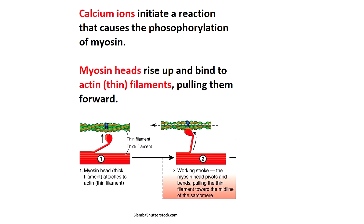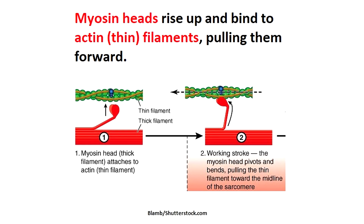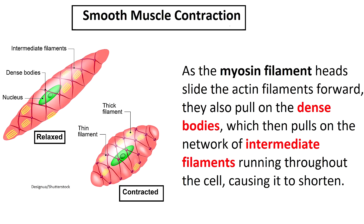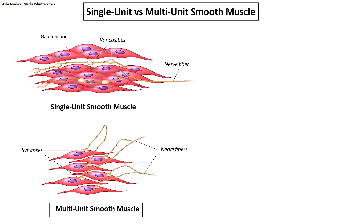Here is a quick overview of how smooth muscle contracts using the sliding filament mechanism, similar to skeletal and cardiac muscle. During contraction, calcium ions initiate a reaction that causes the phosphorylation of myosin, causing the heads on the myosin filaments to rise up and bind to the actin filaments, pulling them forward. As the myosin filament heads slide the actin filaments forward, they also pull on the dense bodies to which the actin filaments attach, which then pulls on the network of intermediate filaments running throughout the cell, causing the entire smooth muscle fiber to contract or shorten.